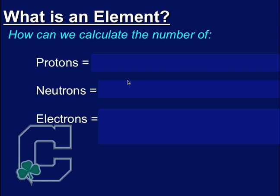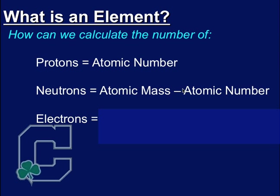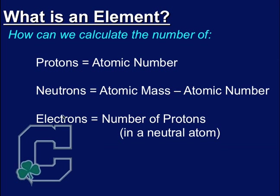So, a quick review. Let's see if we can calculate these numbers. How would I know the number of protons? Well, the number of protons, we just learned, is equal to the atomic number. How could I figure out the number of neutrons? Well, we said that the atomic mass is protons plus neutrons, so if I take that atomic mass and subtract the atomic number, which is equal to the number of protons, then I get the number of neutrons. And then the number of electrons, since electrons are negative and protons are positive, has to be, these two numbers have to be equal, electrons equal to the protons, in a neutral atom.